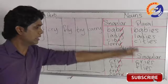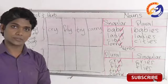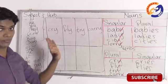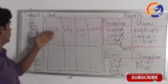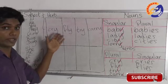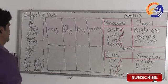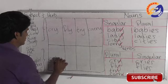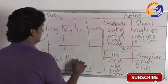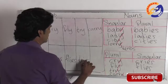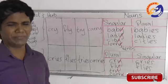In simple present tense, when the subject is plural, the words cry, fly, try, carry stay the same. You don't need to change anything. For example: I cry, we cry, you cry, they cry, girls cry, boys cry, dogs cry.